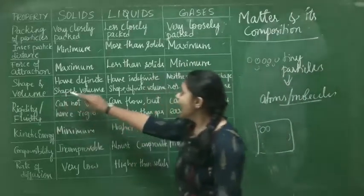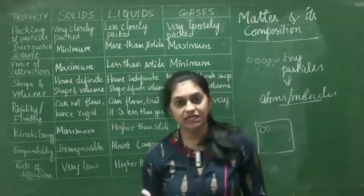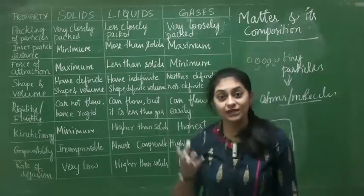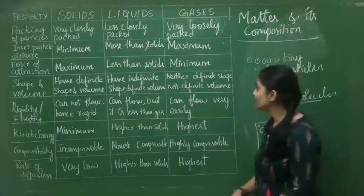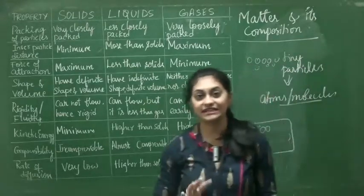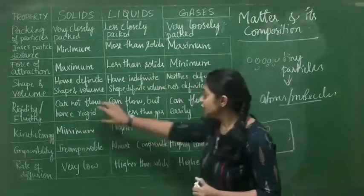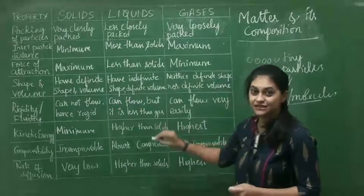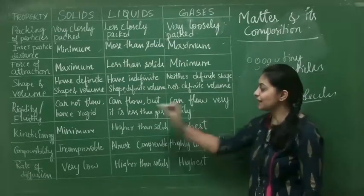Coming to shape and volume: solids have definite shape and volume, whereas liquids have indefinite shape — they can take the shape of the container. They do not have any definite shape but they have definite volume; you can measure it — 500 ml, 1000 ml. Coming to gas, they do not have definite shape nor definite volume. Coming to rigidity or fluidity: because particles are closely arranged, solids are rigid — they cannot flow. Liquids can flow but fluidity is less than gases. Gases can flow very easily and fluidity is higher compared to other states.